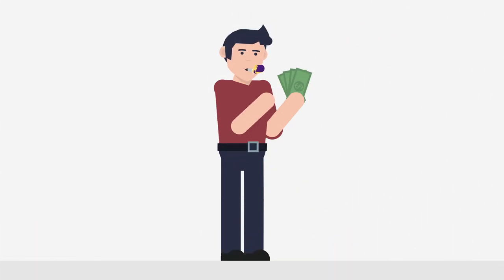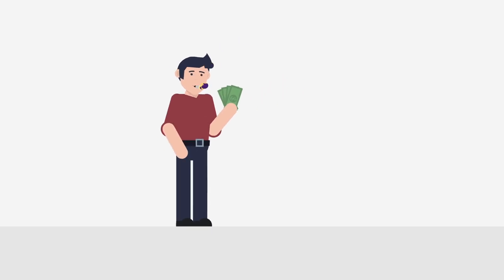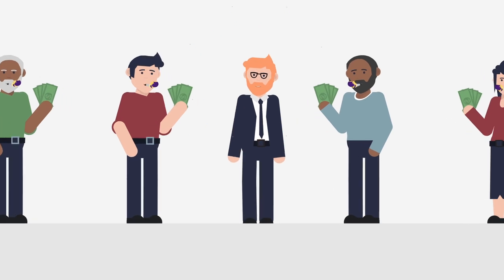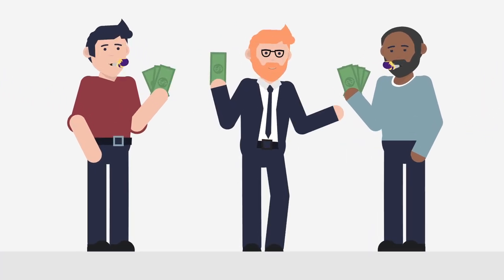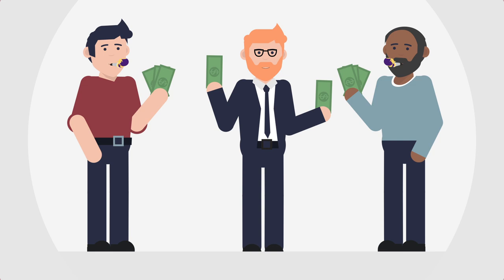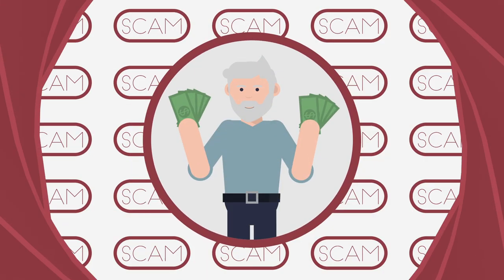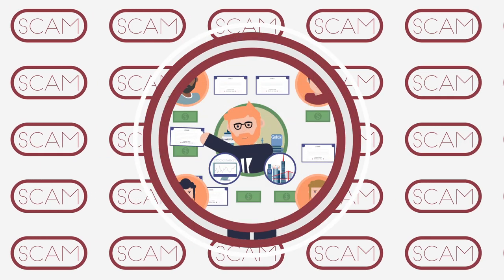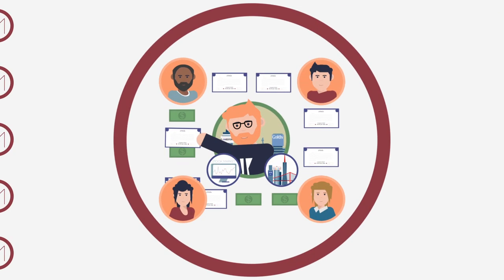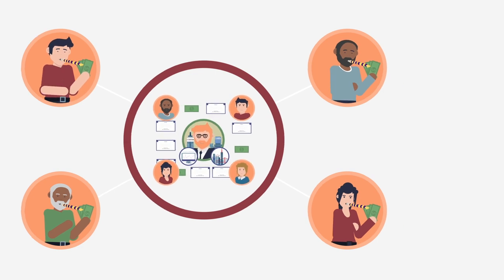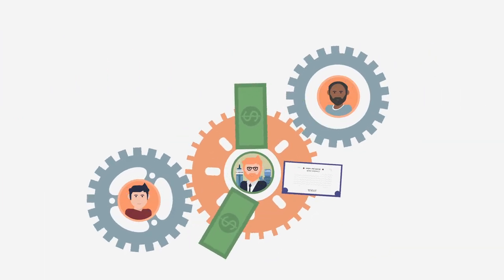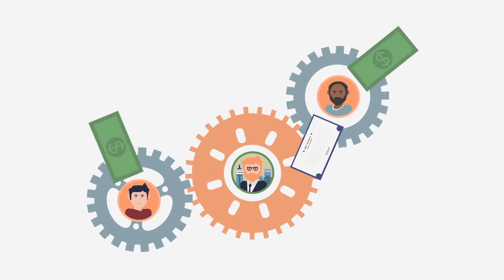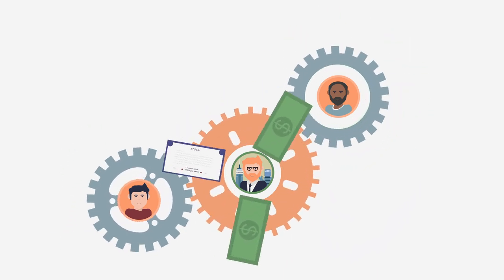But what most people don't realize is that a Ponzi scheme can also produce a lot of winners. It's not a scam where everyone loses money, even with the presence of middlemen and fees. A lot of investors who are involved and unaware of the scam can make money too. The fraudulent aspect of a Ponzi scheme is not its inability to produce a few winners. The issue is in the mechanics and where that money comes from, and how investors who make money are taking it from other investors who also want to make money.